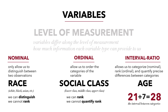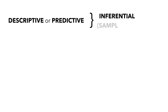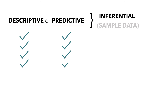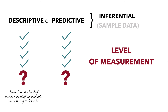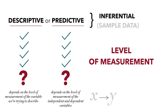Understanding level of measurement is absolutely critical, and here's why. We're going to talk about lots of different statistical procedures — descriptive, predictive, and inferential if the data are sample data. Which descriptive statistic do we use? Which predictive statistic do we use? It depends on the level of measurement of the variables. What descriptive statistic we use depends on the level of measurement of the variable we're trying to describe. What predictive statistic we use depends on the level of measurement of the independent and dependent variables. Level of measurement is absolutely, positively key.